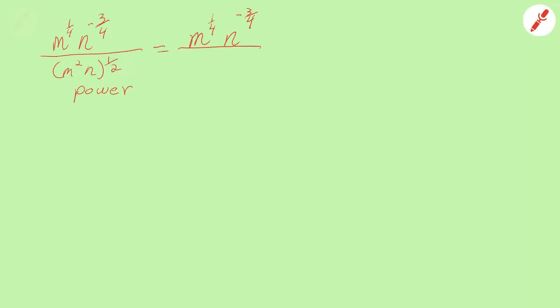Now m to the two raised to the one-half is m to the two times one-half, which is one. So I'll have m to the one power and n raised to the one power raised to the one-half power is going to be n to the one-half power.